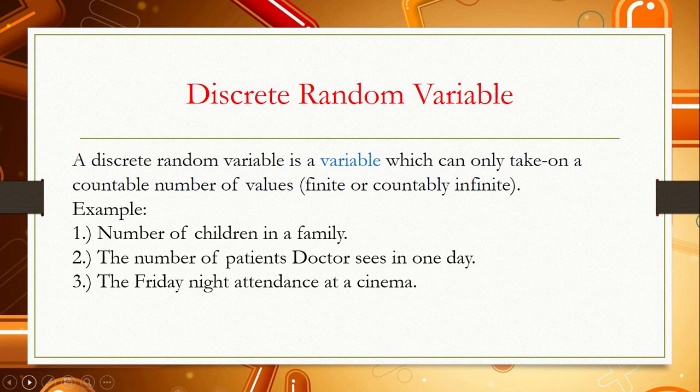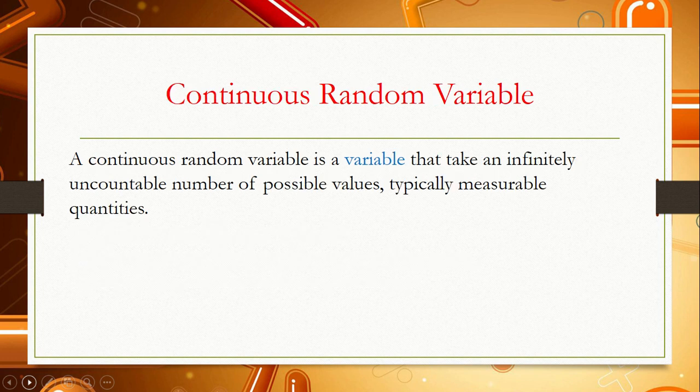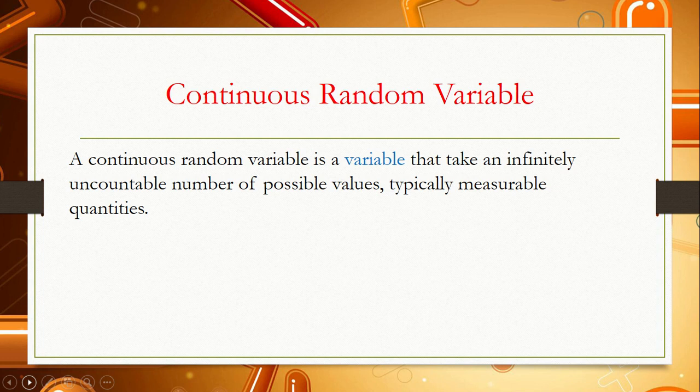The Friday night attendance at the cinema is another example. Next, continuous random variable. A continuous random variable is a variable that takes an infinite and uncountable number of possible values — typically measurable quantities. This type of random variable is uncountable but measurable, like reaction time, electrical current, weight, height, mass, volume, and so on. This is all about measurable quantities. These have too many possible values to list out or to count.